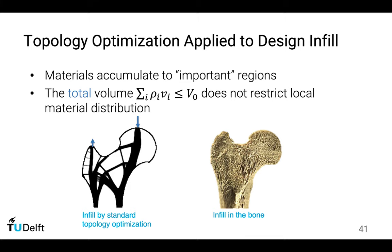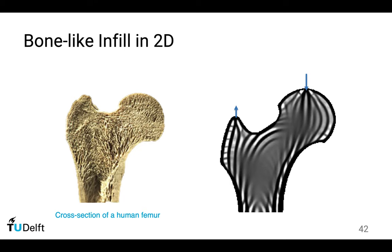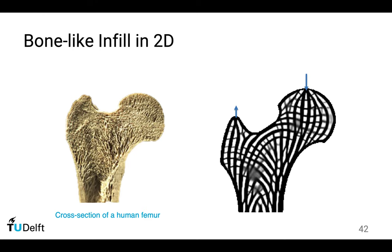If we think about the topology optimization formulation, we have a total volume constraint. We have 60 Lego blocks for the entire domain, and this total volume constraint doesn't tell anything about the local distribution. And this is one of the reasons why the material concentrates. So we did a very simple modification to the standard topology optimization, and as a result of this modification, we obtained a detailed microstructure aligned with principal stress direction. There's a very good agreement between this topology optimized version and this trabecular bone.